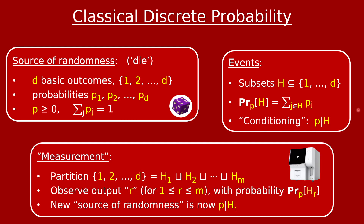I want to talk about one concept not normally associated with classical discrete probability, but I define it in order to make an analogy later with quantum probability. I'm going to call this a measurement. A measurement is simply a partition of the outcomes 1 through d into disjoint events h1 through hm. So exactly one of these events always happens whenever you roll the die. You should think of a measurement as a physical machine that you can put your source of randomness into. When you apply this measurement, you see on its output screen one of the numbers 1 through m — call it r — with probability equal to the probability of event h sub r. Moreover, having seen that outcome, you can think of the source of randomness p as changing to p conditioned on the event h_r, where r is the output you saw on your screen.